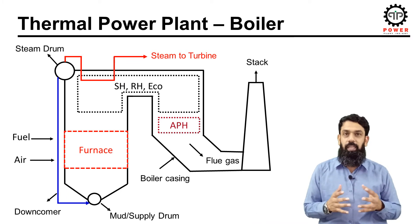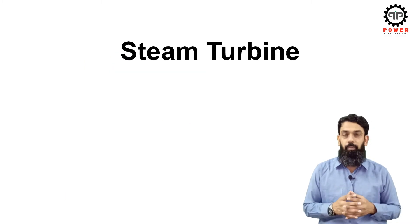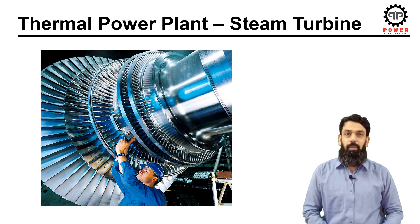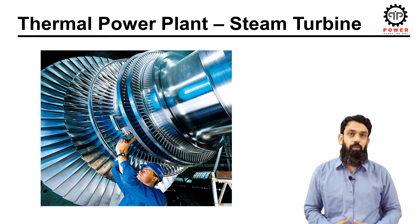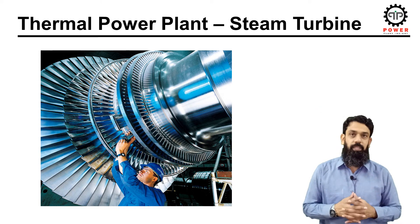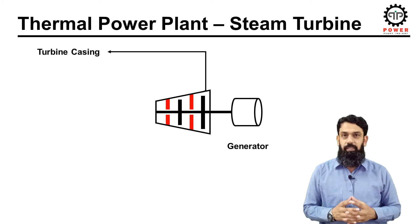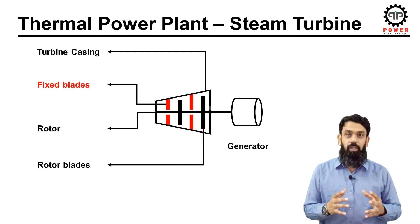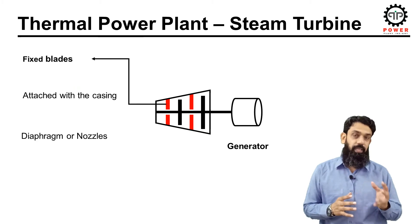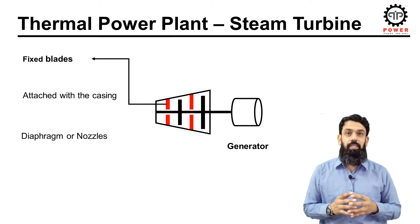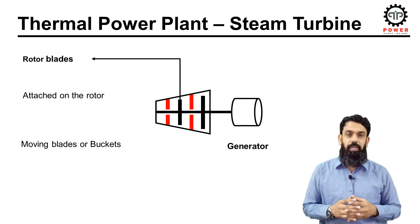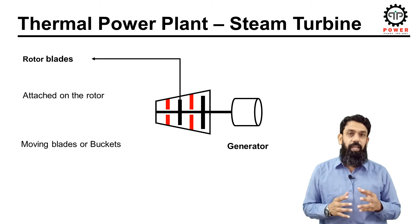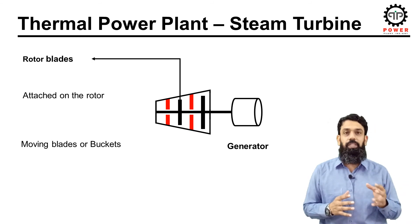Now let's move to our next main component: the steam turbine. Steam turbines are used to convert the thermal energy of steam into mechanical energy. Generally speaking, a steam turbine consists of turbine casing, fixed blades, rotor, and rotor blades. The turbine casing forms the outer covering of the turbine. Fixed blades are attached to the turbine casing and are also called nozzles or diaphragms. Rotor blades are also called buckets or moving blades. The rotor consists of a shaft with rotating blades; the rotor shaft extends beyond the turbine casing through a bearing case, which is coupled with the generator to generate electricity.